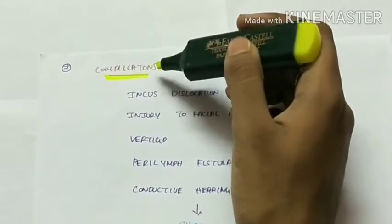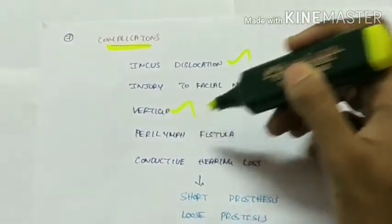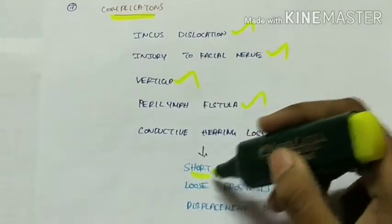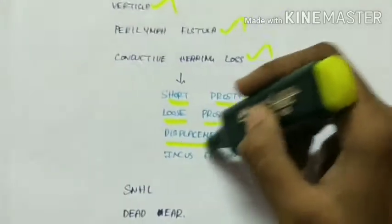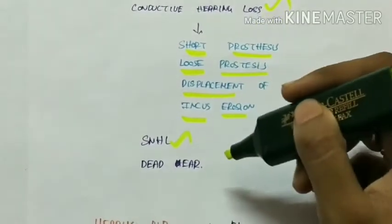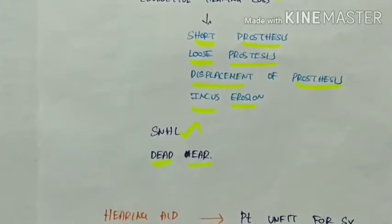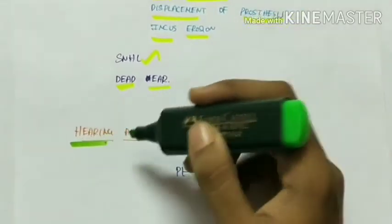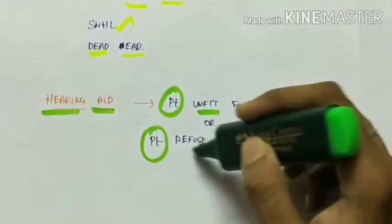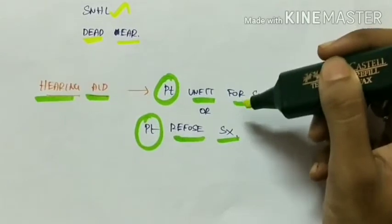Complications of stapedectomy and stapedotomy include incus dislocation, injury to the facial nerve, vertigo, perilymph fistula, and conductive hearing loss due to short, loose, or displaced prosthesis or erosion of the incus. Sensorineural hearing loss can also occur, and a very rare complication is dead ear. Hearing aid is an alternative for patients unfit for or refusing surgery; it does not treat the condition but improves hearing ability.